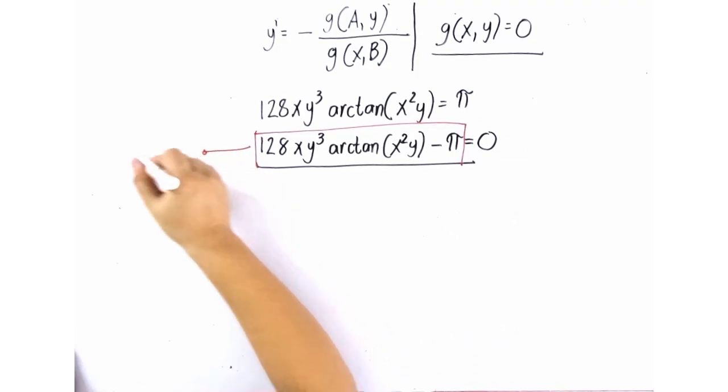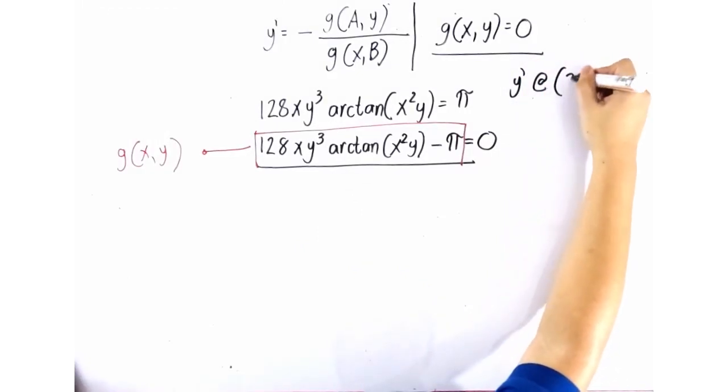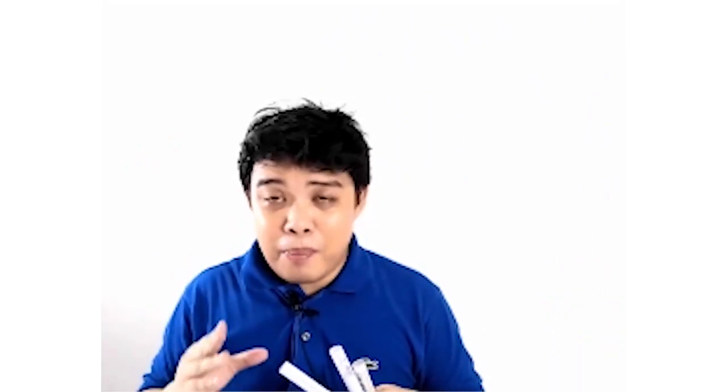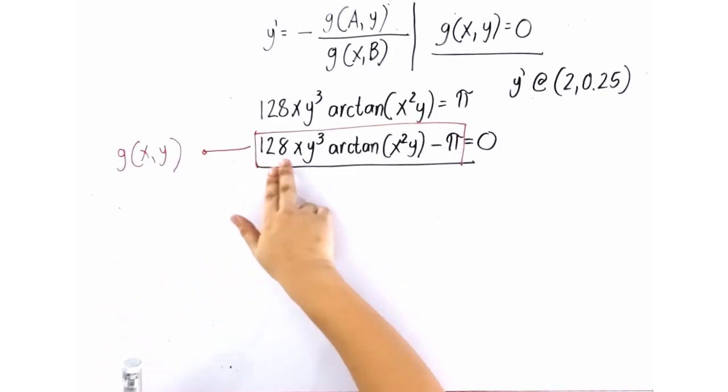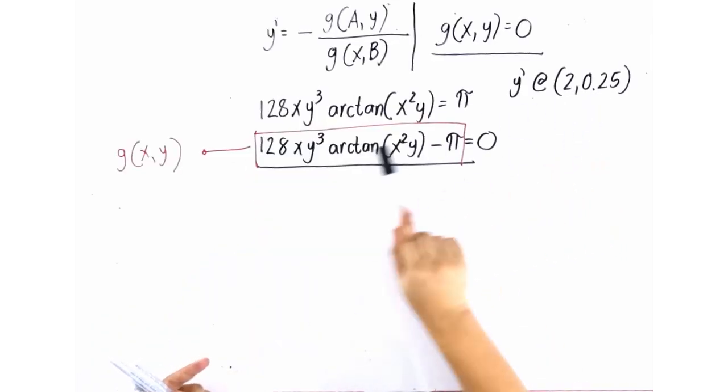This equation is our g of xy. We are asked to find the value of y prime at exactly 0.2 and 0.25. Let me remind you, this technique is based on method of increments, meaning we're going to input a very, very small value number later. So you should make sure that the value of this equation is equal theoretically to zero, meaning there should be no discrepancy. Say, for example, if 2 and 0.25 is substituted in the values of x and y, the value of this should be theoretically equal to zero. Let me check. For easier calculation, you can actually store those values of x and y to letter x and y of your calculator.